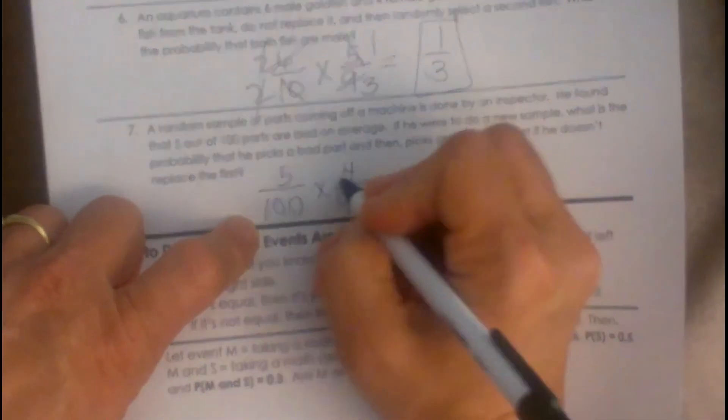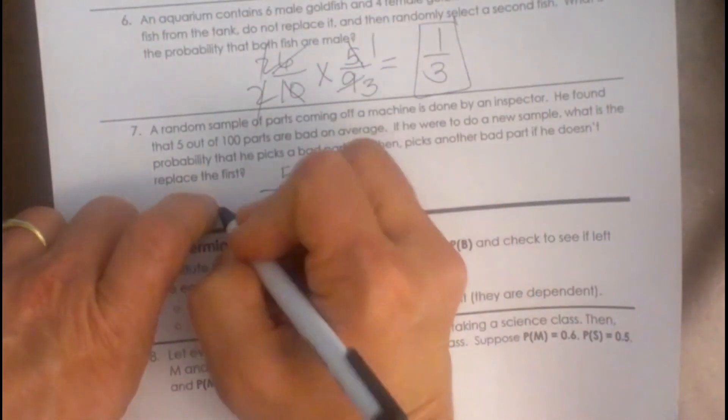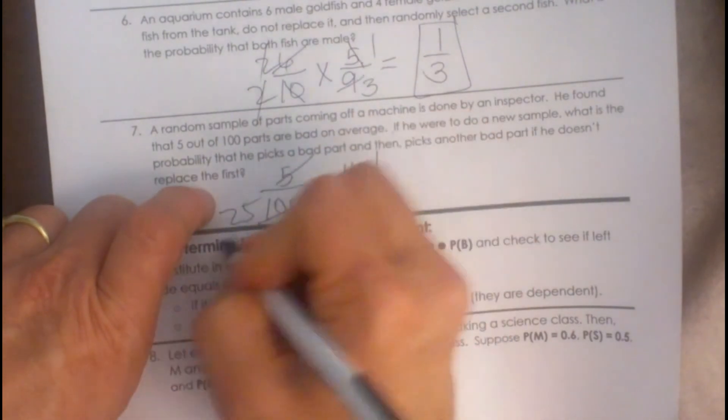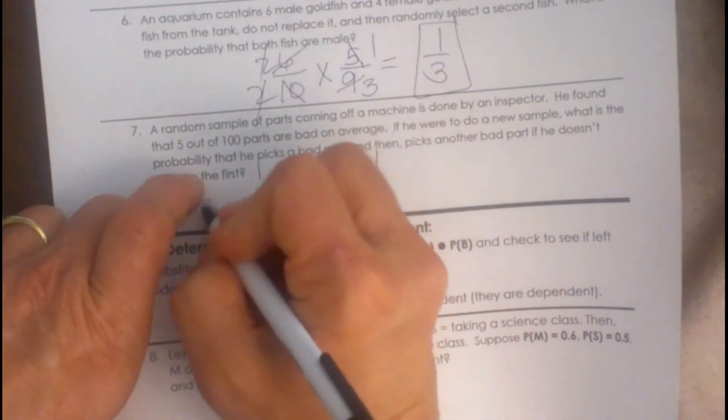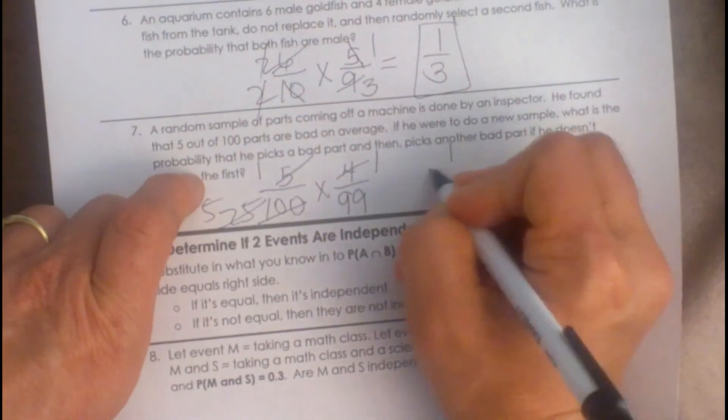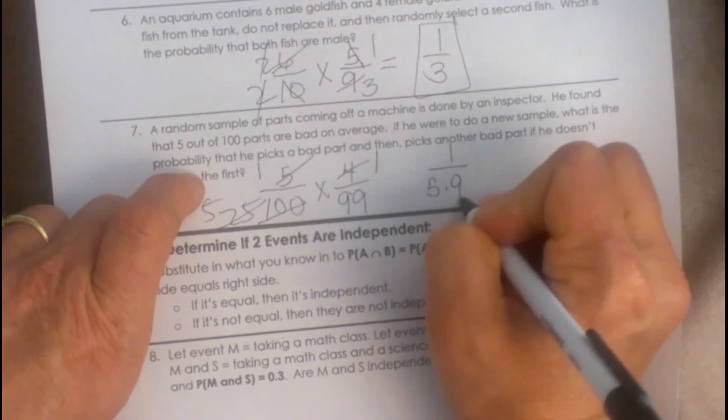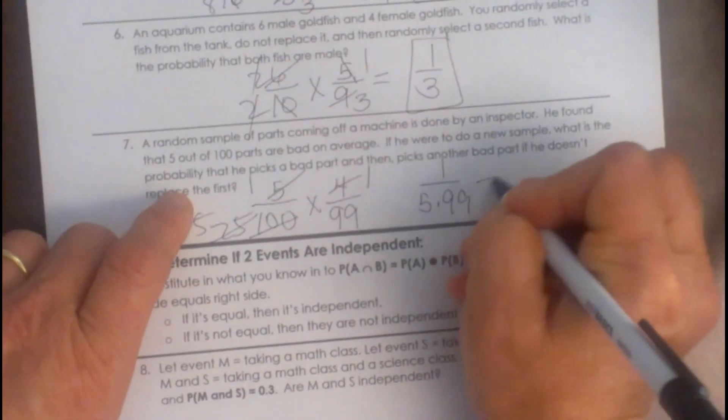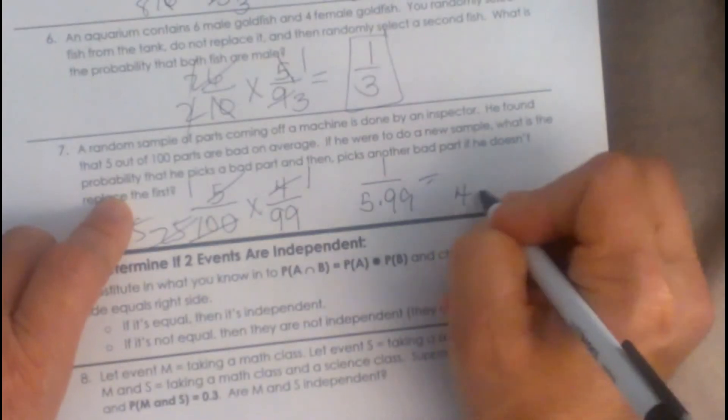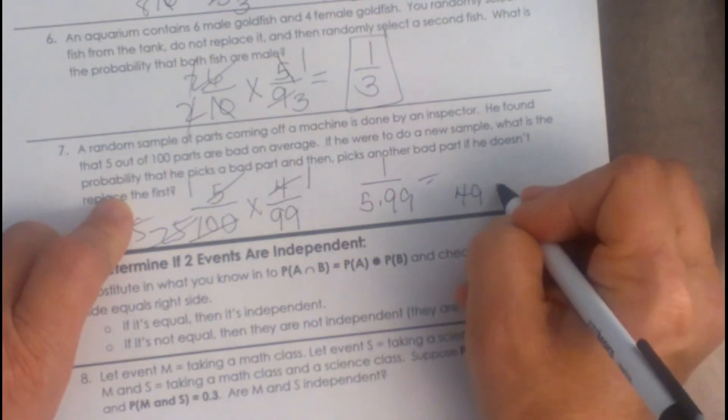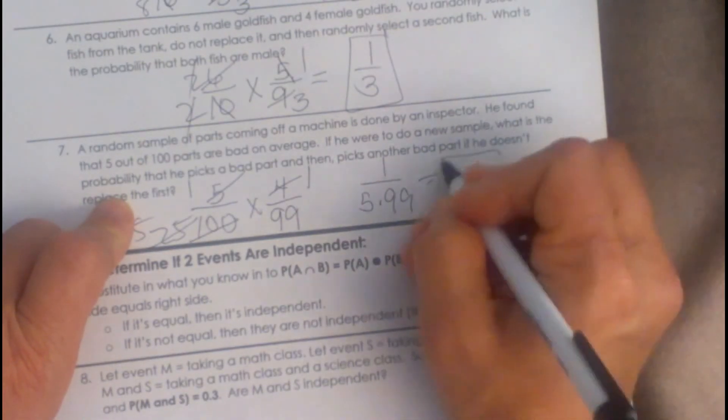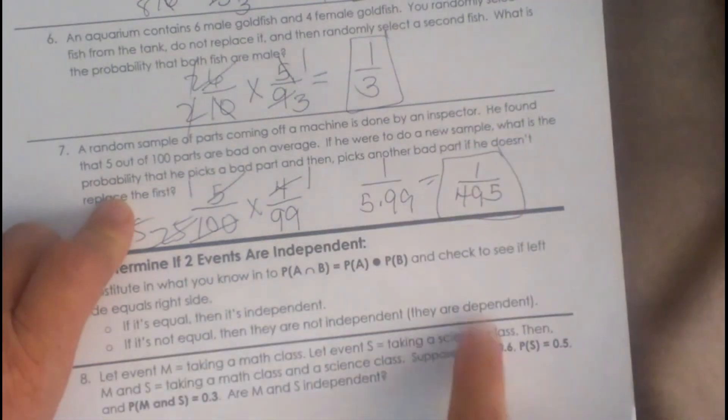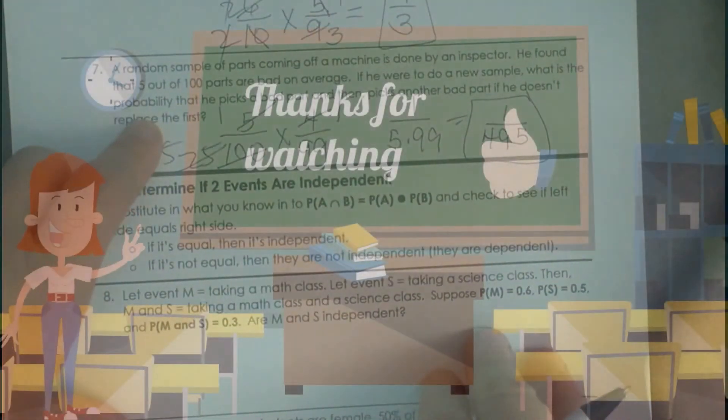Okay so let's reduce these. 1 25th and then 1 5th. So that is 1 out of 5 times 99 and 5 times 99 would be what? 495 out of 1. There you go. So 1 out of 495 times that would happen.